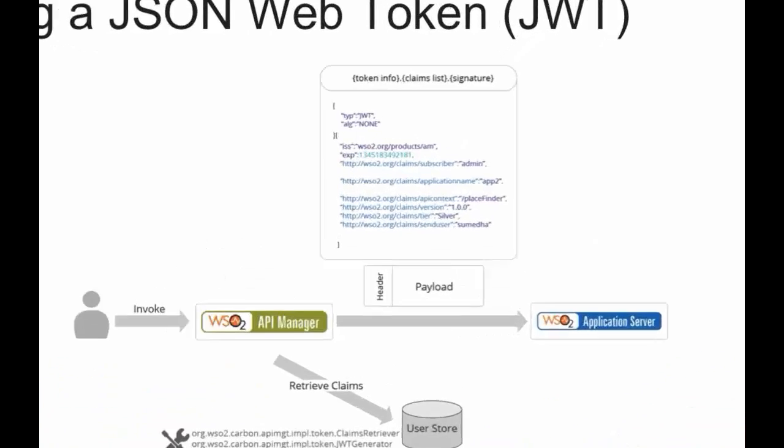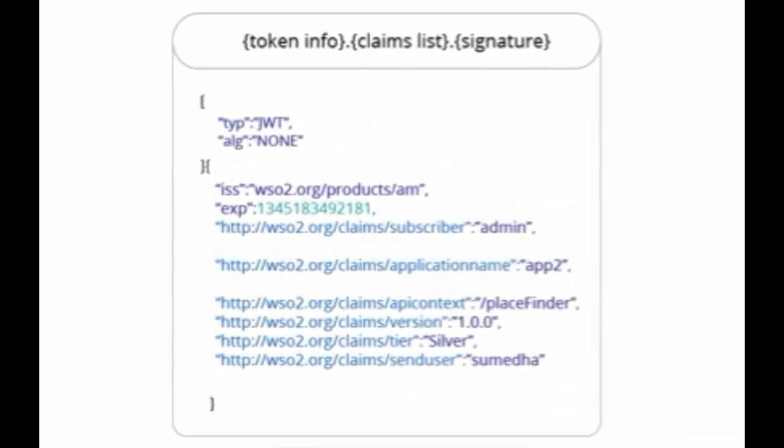The JWT that is generated by default has predefined attributes that are passed to the back-end. These include basic application-specific details, subscription details, and end-user information, all of which are defined in the JWT generator class that comes with API manager.